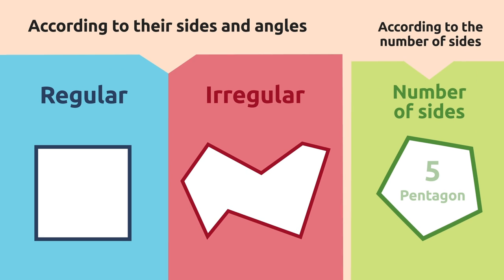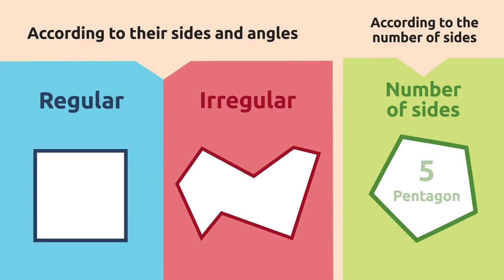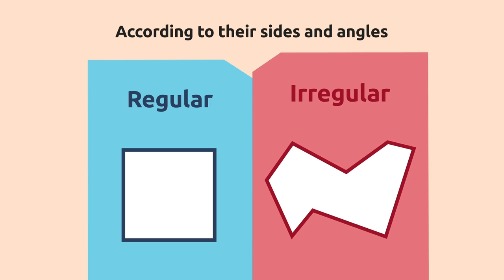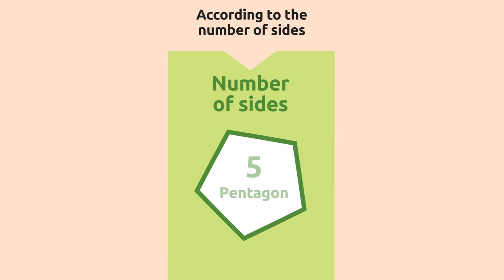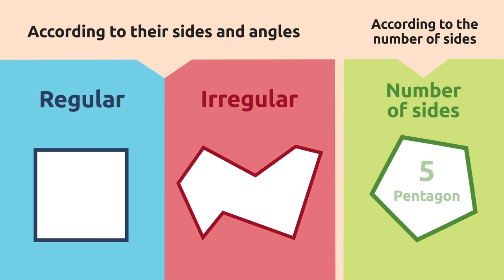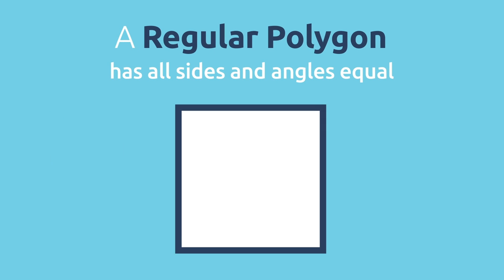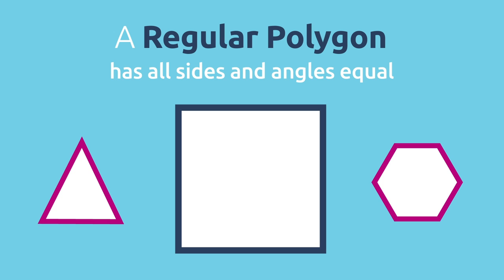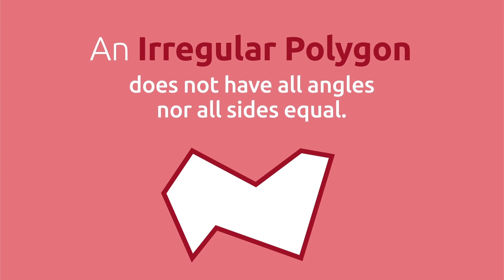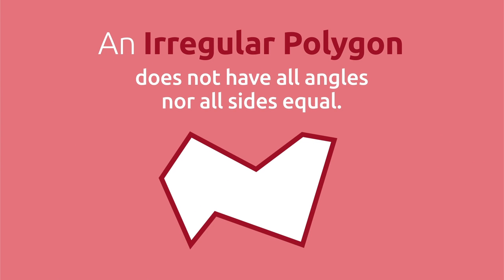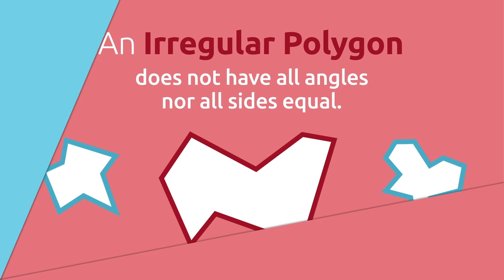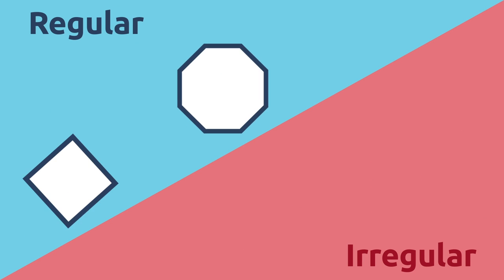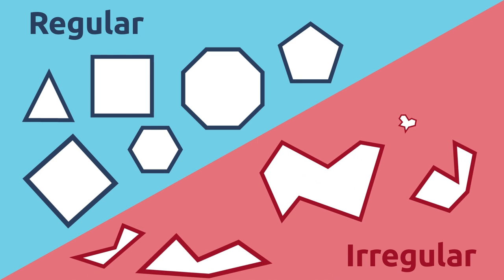We can classify polygons in different ways — regular or irregular — and depending on the number of their sides. A regular polygon has all sides and angles equal. An irregular polygon does not have all angles nor all sides equal. Here you can see some examples of regular and irregular polygons.